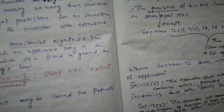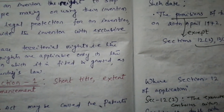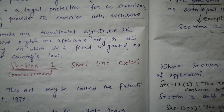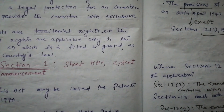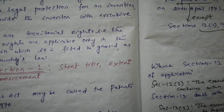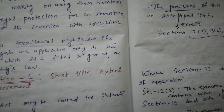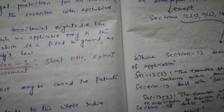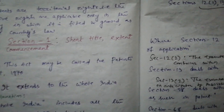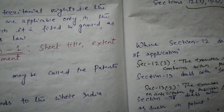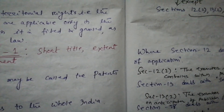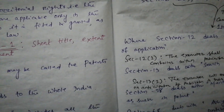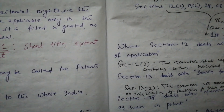So this way Section 1 is completed, which has the title 'Short Title, Extent and Commencement.' I can say this is the easiest section. Please go through the video and through the bare act as well for reference. Please comment in the comment section; if you have any queries, please ask me. And please subscribe to my channel by pressing the bell icon. Thank you so much, friends.